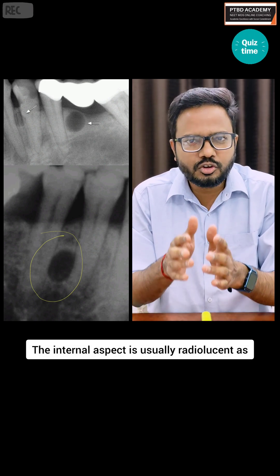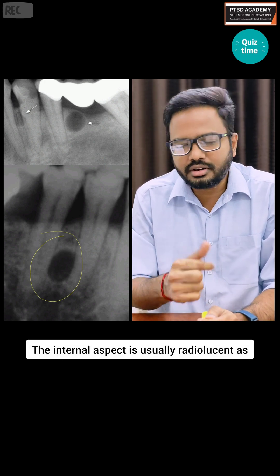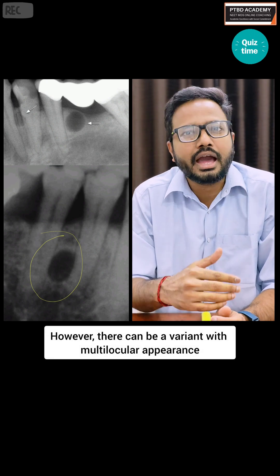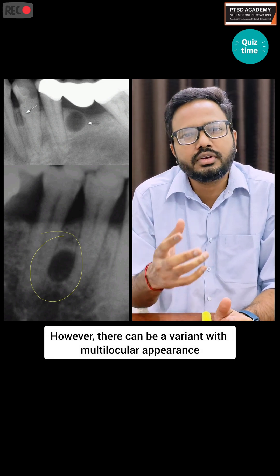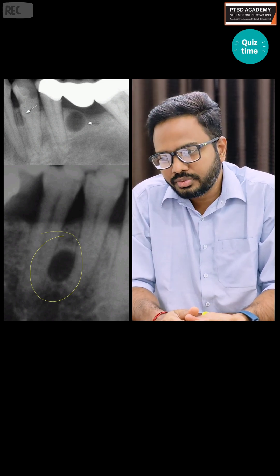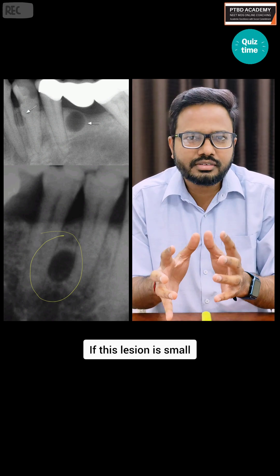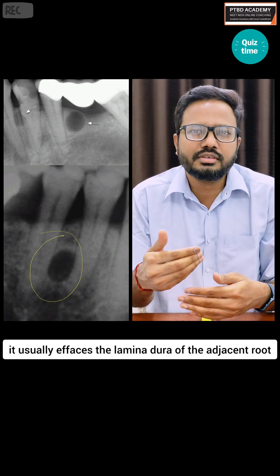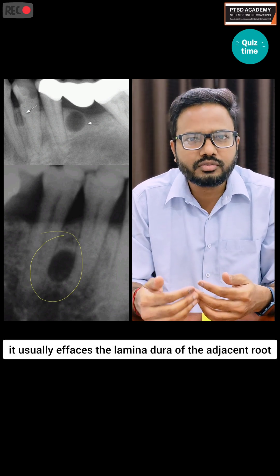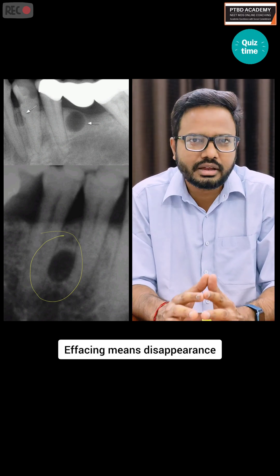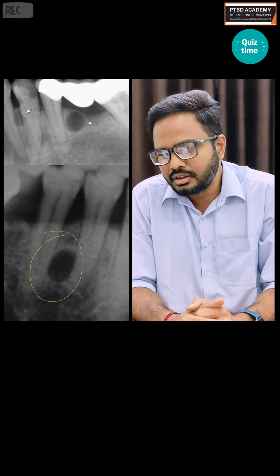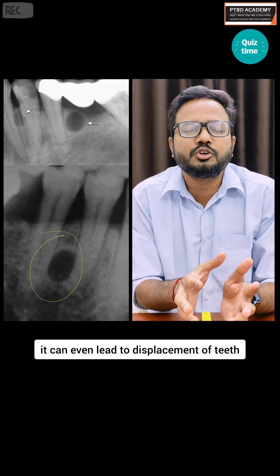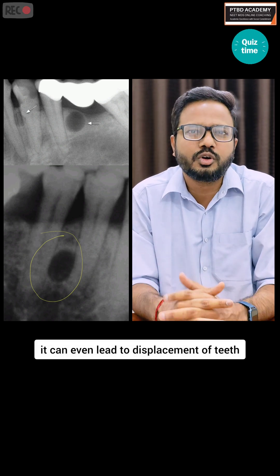The internal aspect is usually radiolucent, as we can see in this case. However, there can be a variant with a multilocular appearance. If this lesion is small, it usually effaces the lamina dura of its centroid — effacing means disappearance. If it is large, it can even cause displacement of teeth.